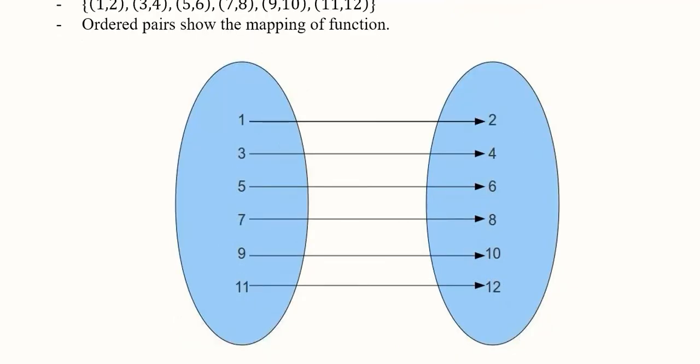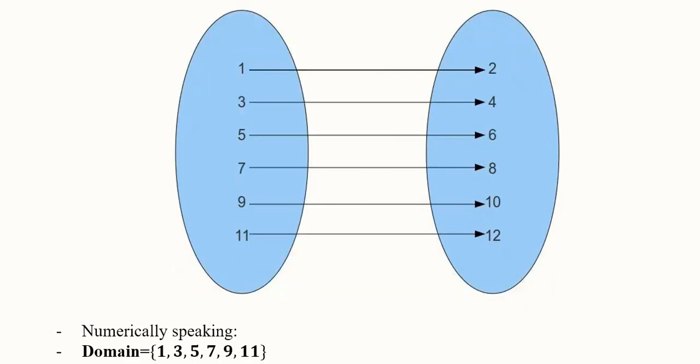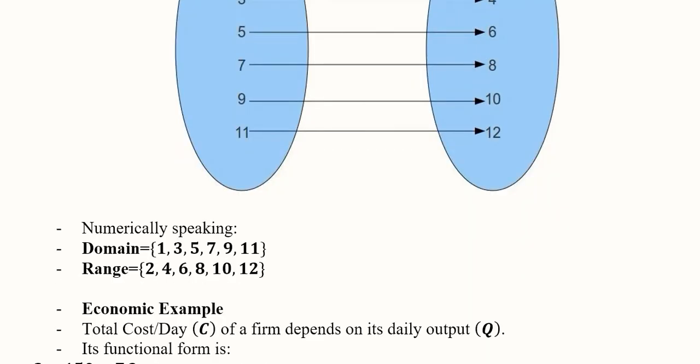It tells us how each value is determined in the given function. So domain and range can be written as separate sets, and you can see that one set is known as domain and the other is known as range.